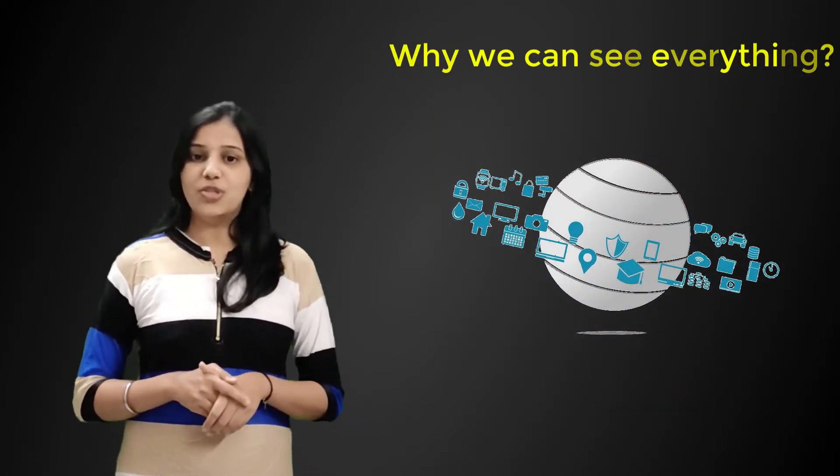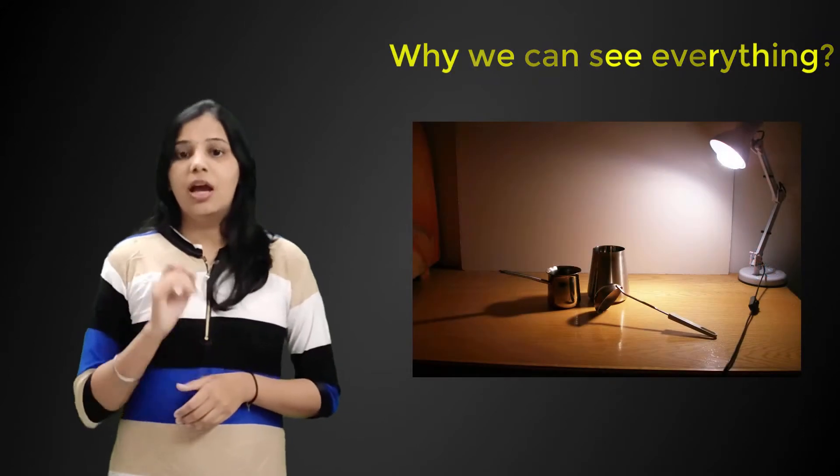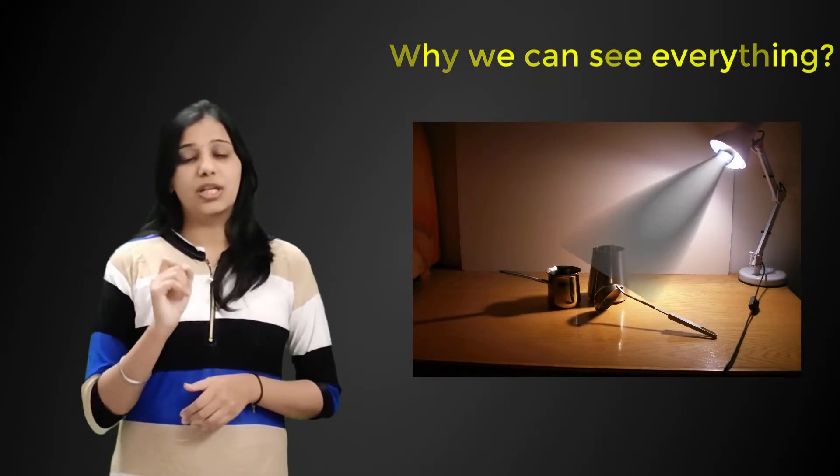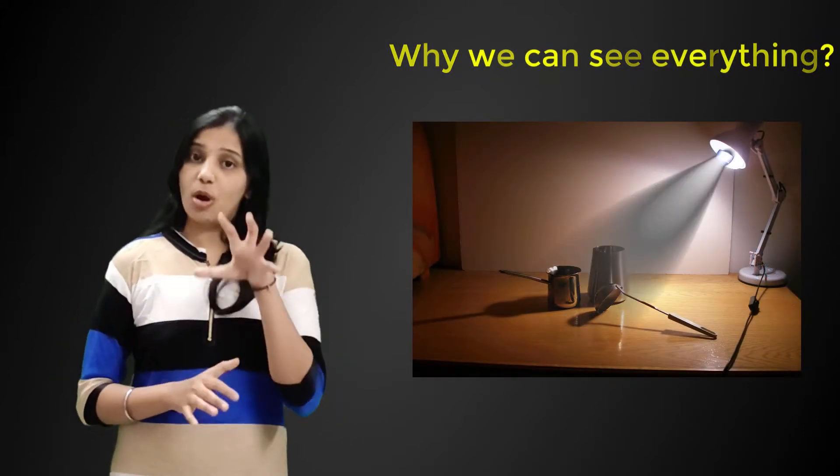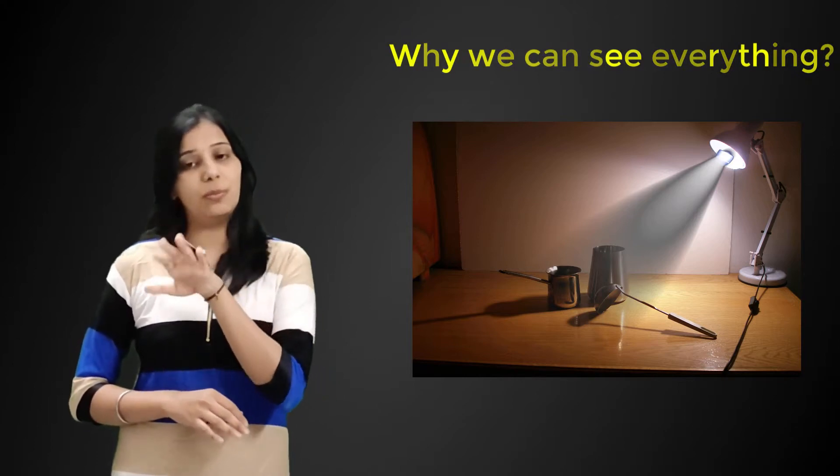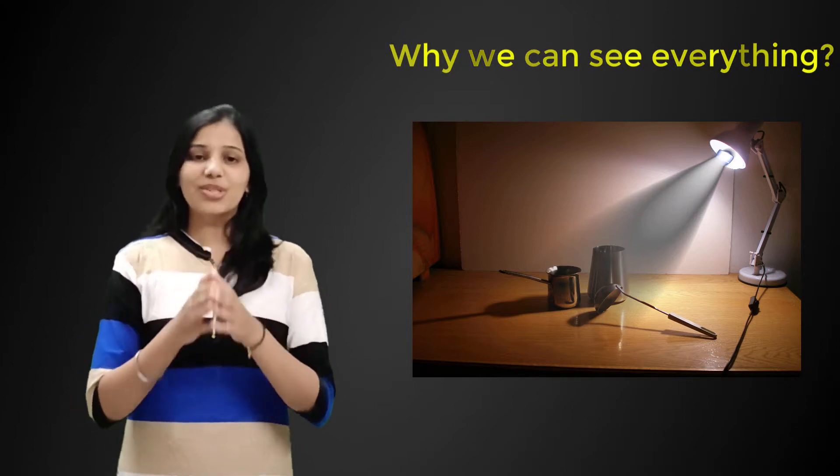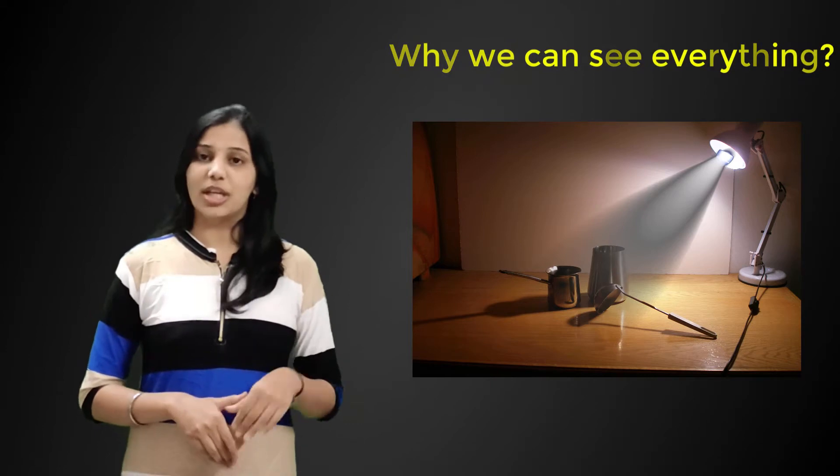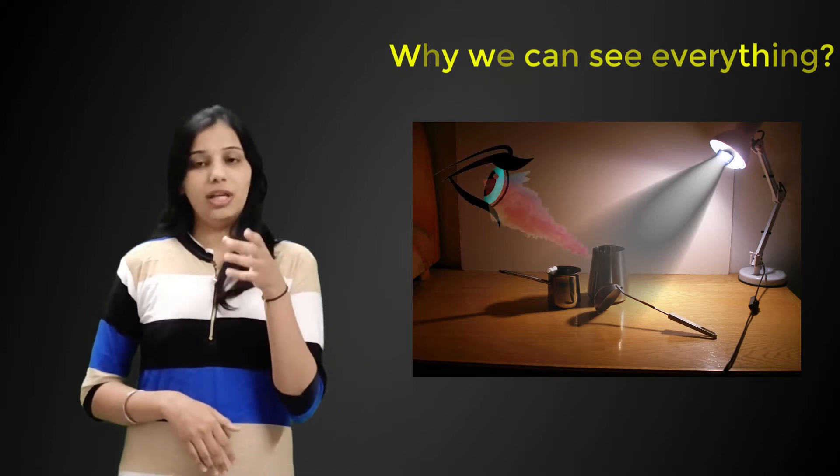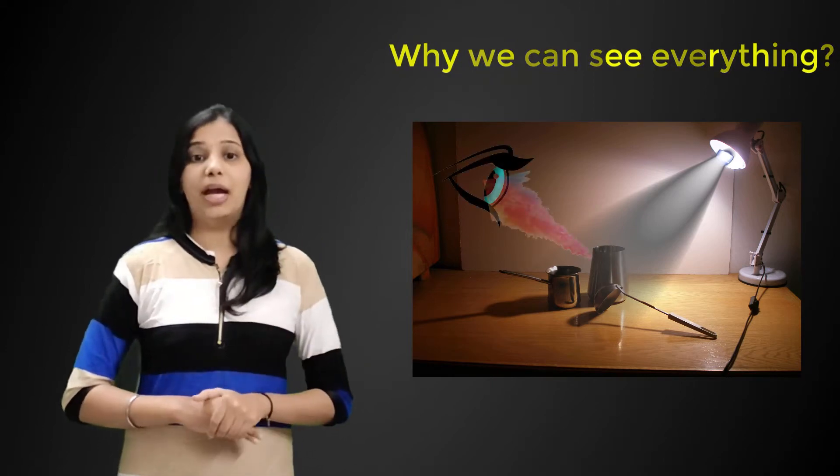For us to see an object, we need light. After light has hit an object, some of the colors will be absorbed by it and other colors will be reflected by it. Those colors that are reflected by the object travel to our eyeball and are interpreted by your brain.